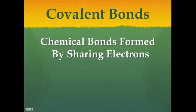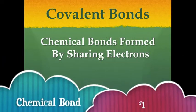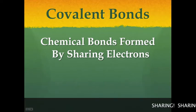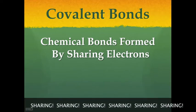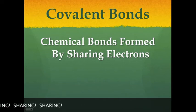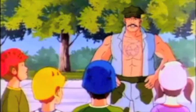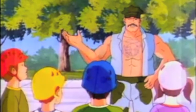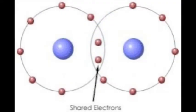Covalent bonds are the first type of chemical bond that we're going to discuss. They're formed by sharing electrons. Here's an example of two atoms sharing electrons to form a molecule.